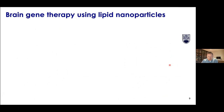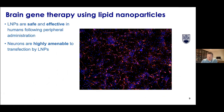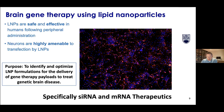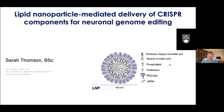At that time, LNPs were known to be safe and effective with peripheral administration, but there really wasn't any data on what happened when we delivered them to the brain. We had early data showing that neurons could be transfected by LNPs safely and effectively. The goal of our initial NMIN program was to optimize LNP formulations for the delivery of genetic therapy payloads — focusing on siRNA for gene knockdown and mRNA for gene replacement — with the ultimate goal to deliver these therapies to the brain. I'll now pass the baton to Sarah Thompson.